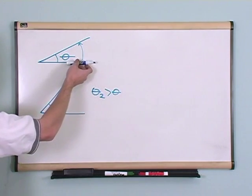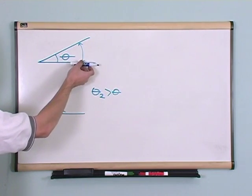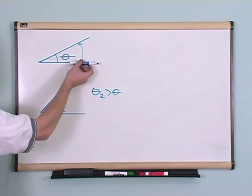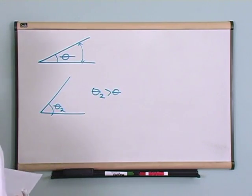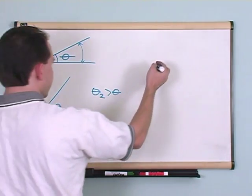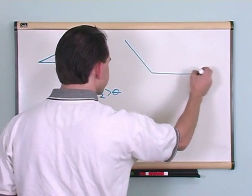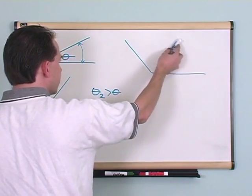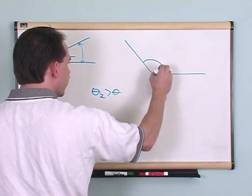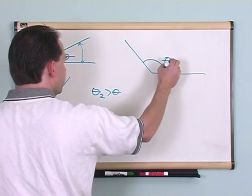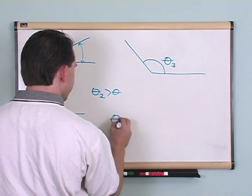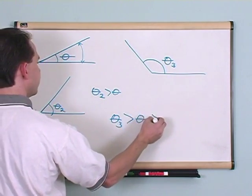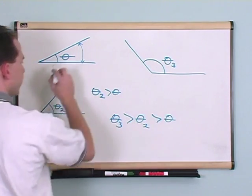Angles are traditionally measured in a positive sense, in the counter-clockwise sense. So this is positive angle measure. Another example of an angle would be something like this. Again, we're going to measure the angle in a counter-clockwise sense, and that's going to be positive measure. So if I'm looking at this angle here, that would be theta three, and definitely theta three is greater than theta two, which is greater than the first theta we put on the board.